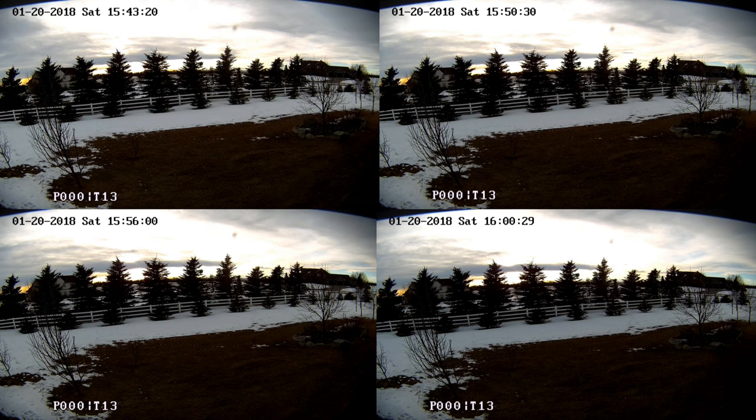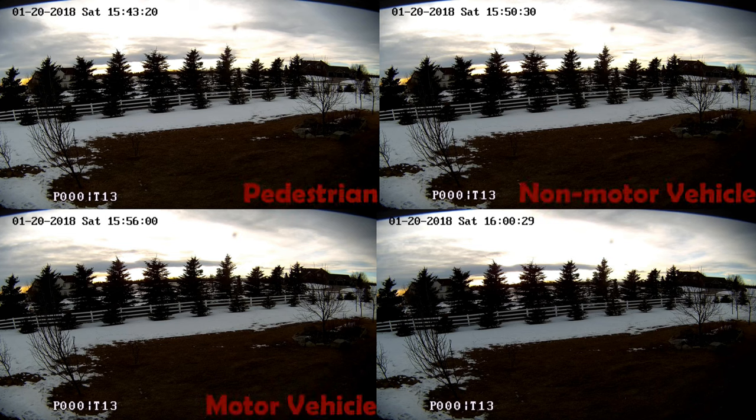We do the exact same scenario with all four modes at the same time on the screen. In the upper left-hand corner, we have pedestrian, then non-motor vehicle, motor vehicle, and finally auto. These are equally fast-forwarded.